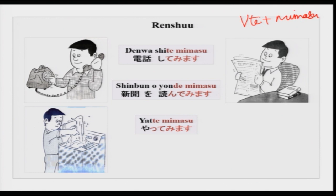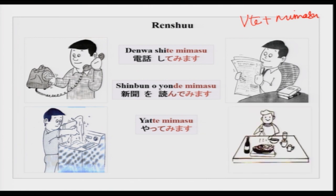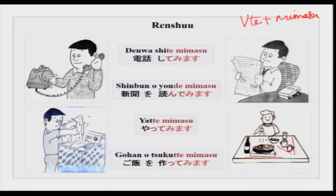Mo ichido yatte mimasu — I will try it once again. If I have messed up once, it does not matter, I will try and do it once again. Then he is making Japanese food — from the cups and things kept over here they are very Japanese, and this is nabe ryori on the table. So: nihon ryori dekimasu ka, joozu janai kedo, yatte mimasu or tsukutte mimasu. He is trying — tsukutte mimasu, I will make and see.